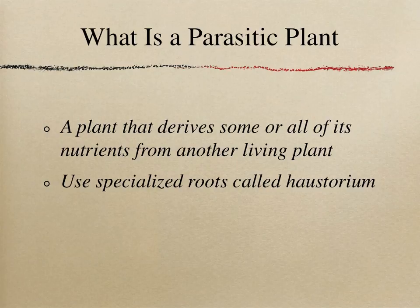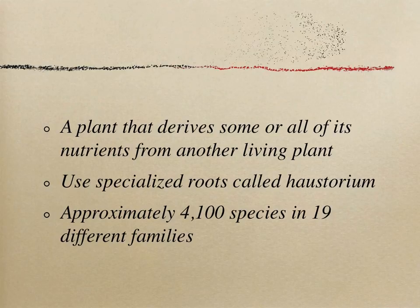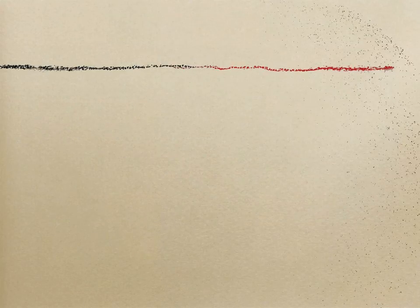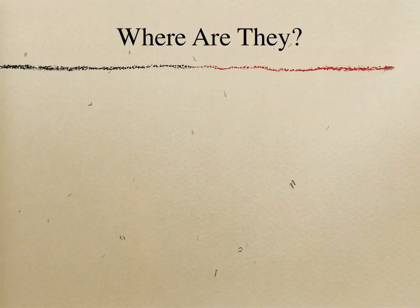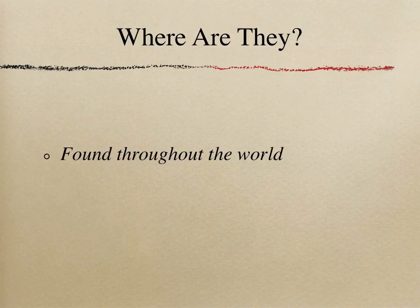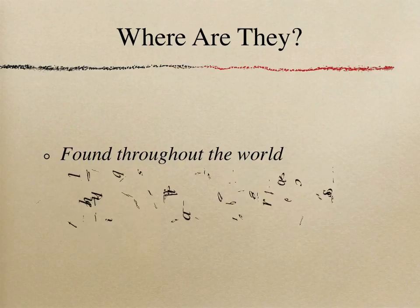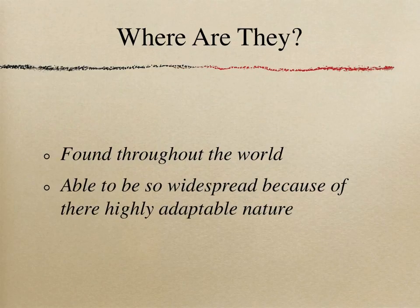There are over 4,100 species of parasitic plants in over 19 different families. Parasitic plants are found throughout the world and have evolved to handle a wide variety of climates and habitats. They are capable of doing this because, unlike other plants, they are not reliant on climate-controlled variables such as soil condition and weather, since their source of nutrients are other plants that have already acclimatized to these conditions.